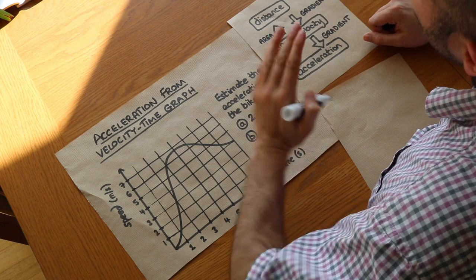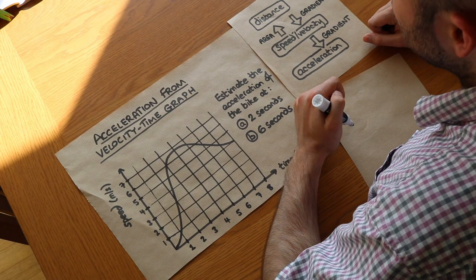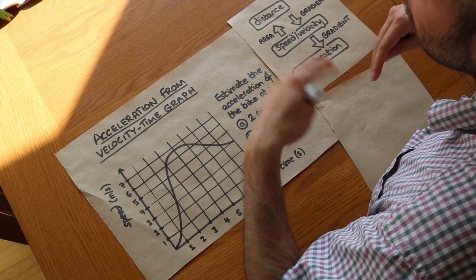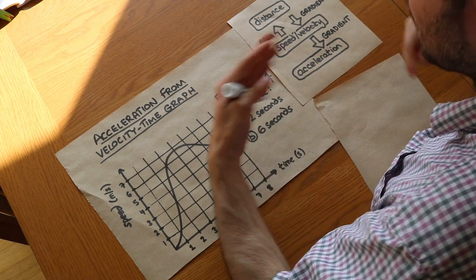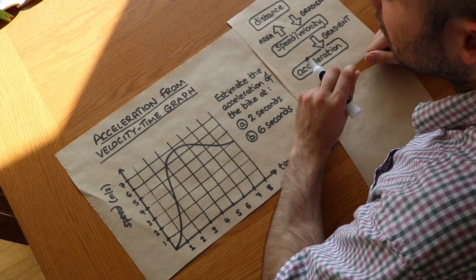So if the speed is going up quite rapidly, then we're saying we're accelerating quite fast. And this idea of rate of change is very important, particularly if you get to A-level maths. But rate of change is just another way of saying gradient.